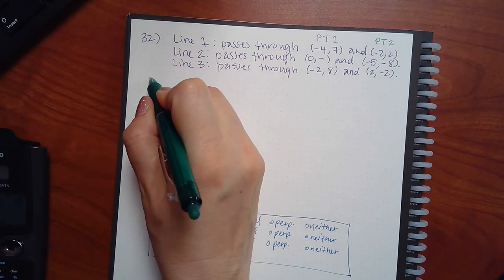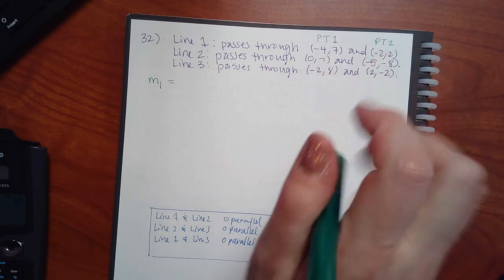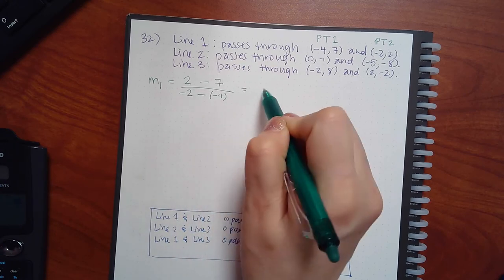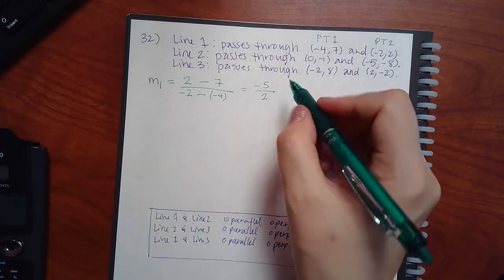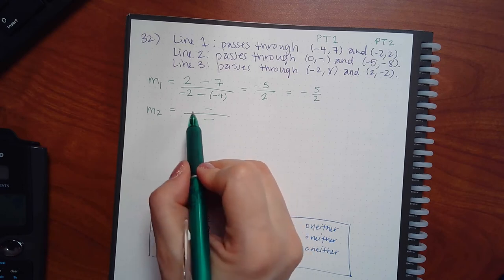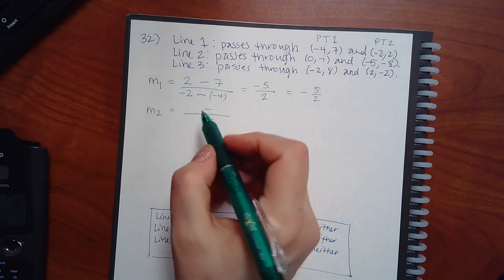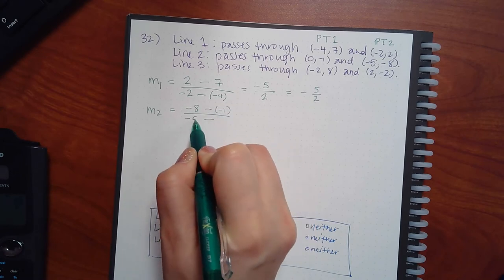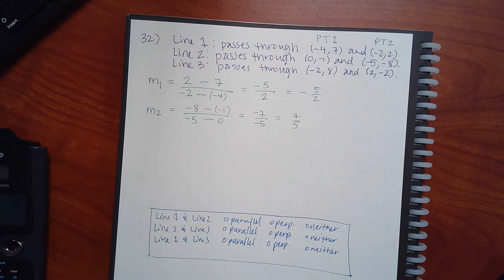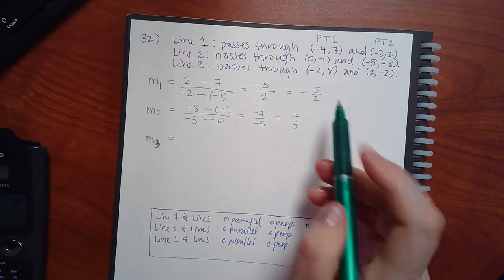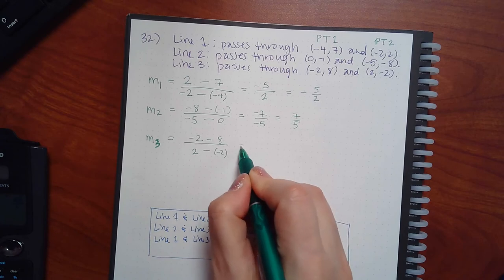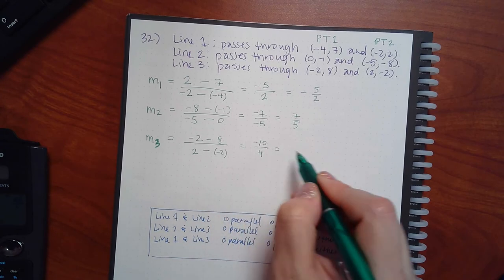For line one's slope, I compute (y2 minus y1) over (x2 minus x1). For line two's slope, I use the points (0, negative 1) and (negative 5, negative 8): that gives 7 over negative 5, which is positive seven-fifths. For line three, using the relevant points: negative 2 minus 8 over the difference in x gives negative 10 over 4, which reduces to negative 5 over 2.